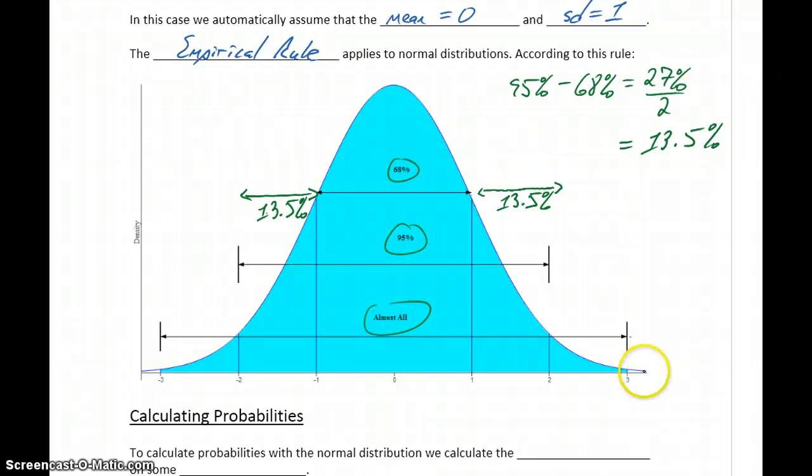We say almost all because this curve continues to extend in both directions infinitely. There's no endpoint to this curve. We have more data values that are four standard deviations away, 12 standard deviations away, but that just becomes very few. The frequencies there are very sparse.